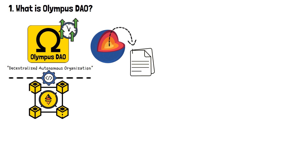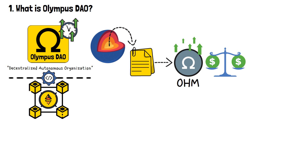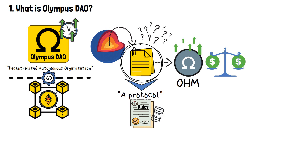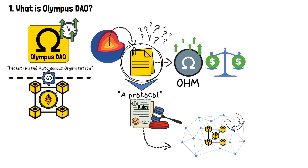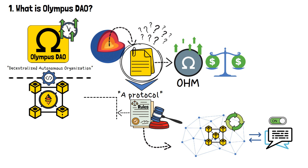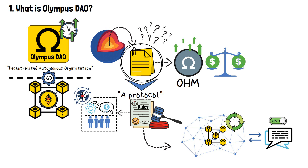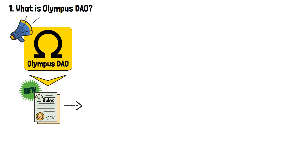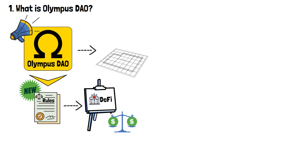At its core, Olympus DAO seeks to establish a protocol where a native cryptocurrency, known as OM, can thrive and serve as a stable store of value. A protocol refers to a set of rules and specifications that govern how different components within a blockchain ecosystem interact with each other — just like a language that enables communication. So, when we're talking about Olympus DAO, we're talking about the creation of a whole new set of rules that would redefine the entire DeFi game when it comes to maintaining a stable value.